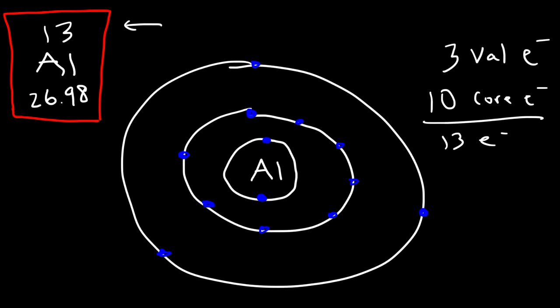So just make sure you understand this: the valence electrons are the electrons in the outermost energy level. These are the electrons that participate in chemical reactions. The inner core electrons, for the most part, rarely participate in a chemical reaction. It's the valence electrons that are involved in the reactions we see on a day-to-day basis.